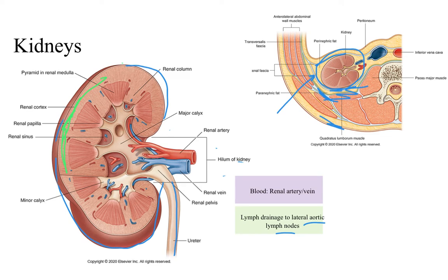In the medulla, we can see that we have these renal pyramids. The renal pyramids are primarily where those nephron loops are going to be located, as well as collecting ducts. In between each one of these pyramids, we have renal columns, and you notice that there are blood vessels in those columns.